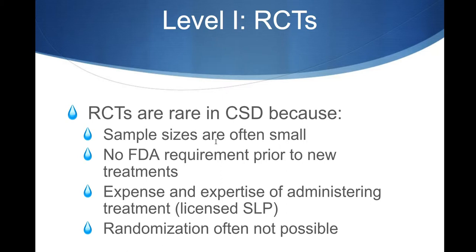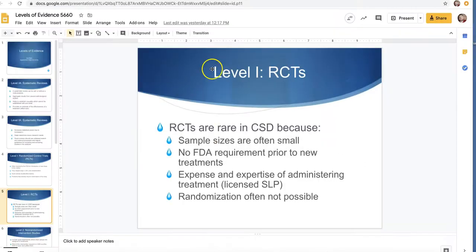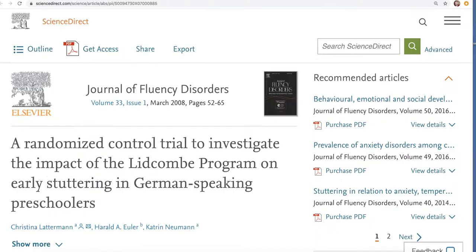Randomized control trials are rare in CSD, although they're becoming more common. Sample sizes are often small; we don't have an FDA requirement prior to new treatments. It's also very expensive — you'd have to hire all different kinds of speech therapists to provide therapy in a certain way and have all different kinds of clients involved. Because of the small sample size, it can be hard to randomize who's in your study and hard to randomize between groups. So a lot of our studies aren't going to be level one.